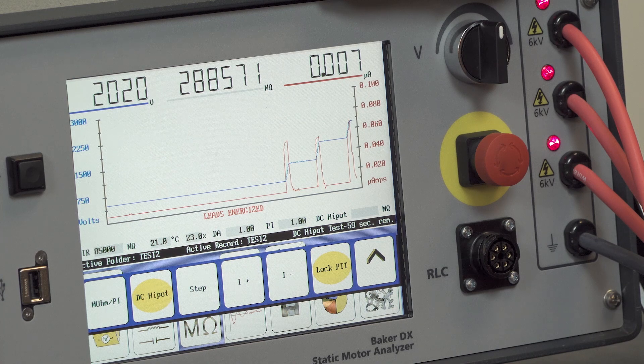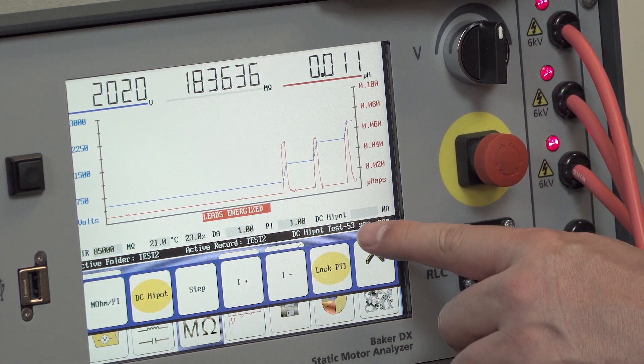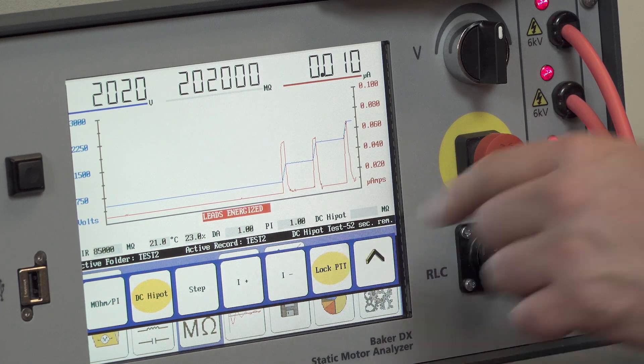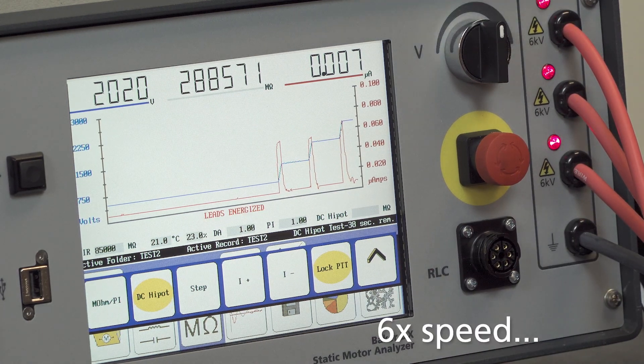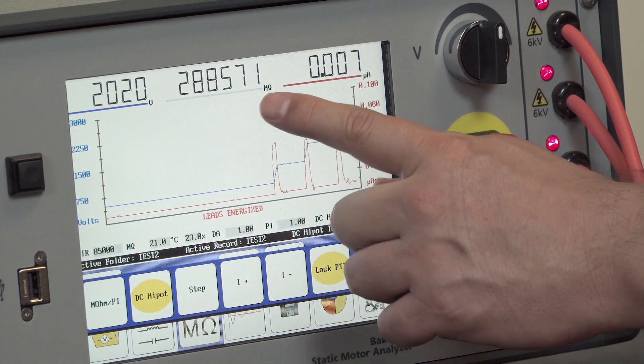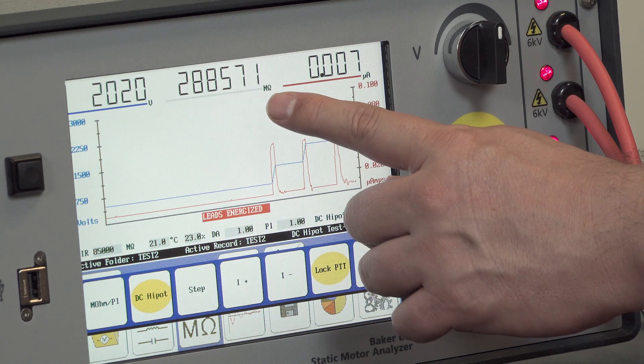And here on the right we see DC high pot test and the time ticking down from 53, 52 down to zero. Here in the middle we have the calculated insulation resistance value in mega ohms and the indicated measured leakage current in micro amps.